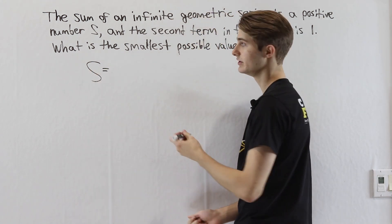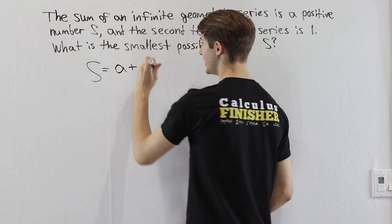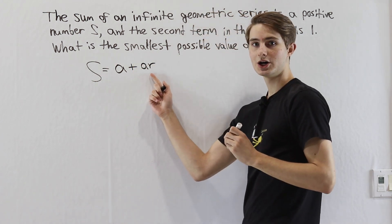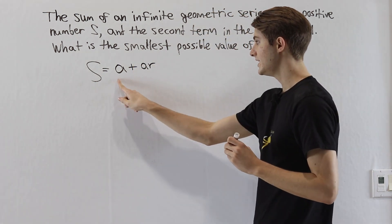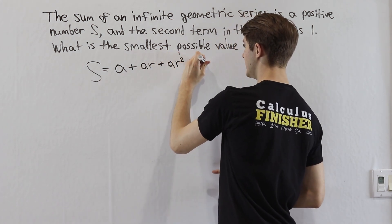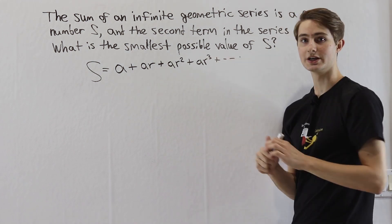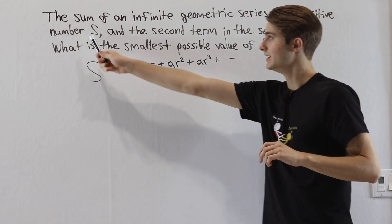We know for a geometric series we're going to have a first term a, and then every term after that is going to be multiplied by a common ratio r. So we have a plus ar, plus ar squared, plus ar cubed, and so on to infinity. This is going to converge to a finite value s.